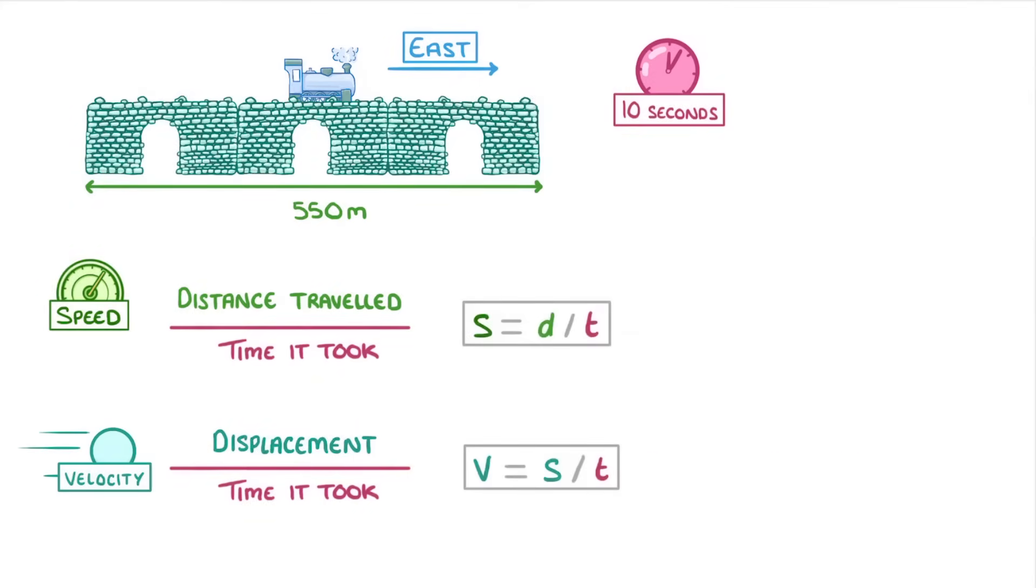Now, the symbol formulas for these two equations can be kind of confusing because they use the letter s to represent different things. For velocity, the s refers to the displacement, but in the speed equation, the s stands for speed, and the d is distance. In both cases though, the t stands for time.